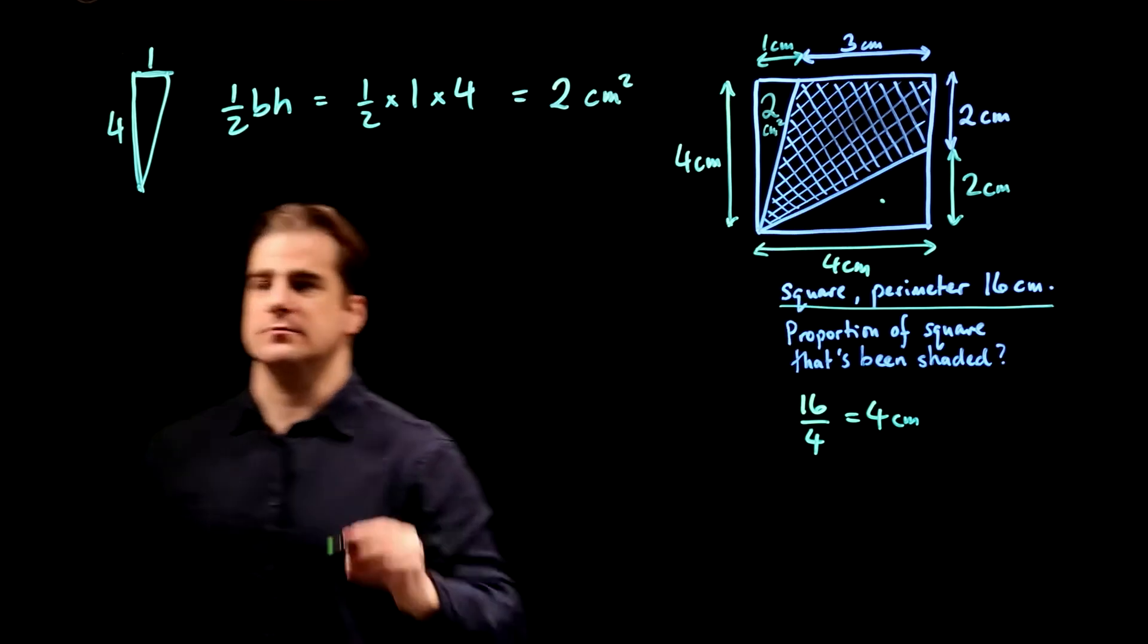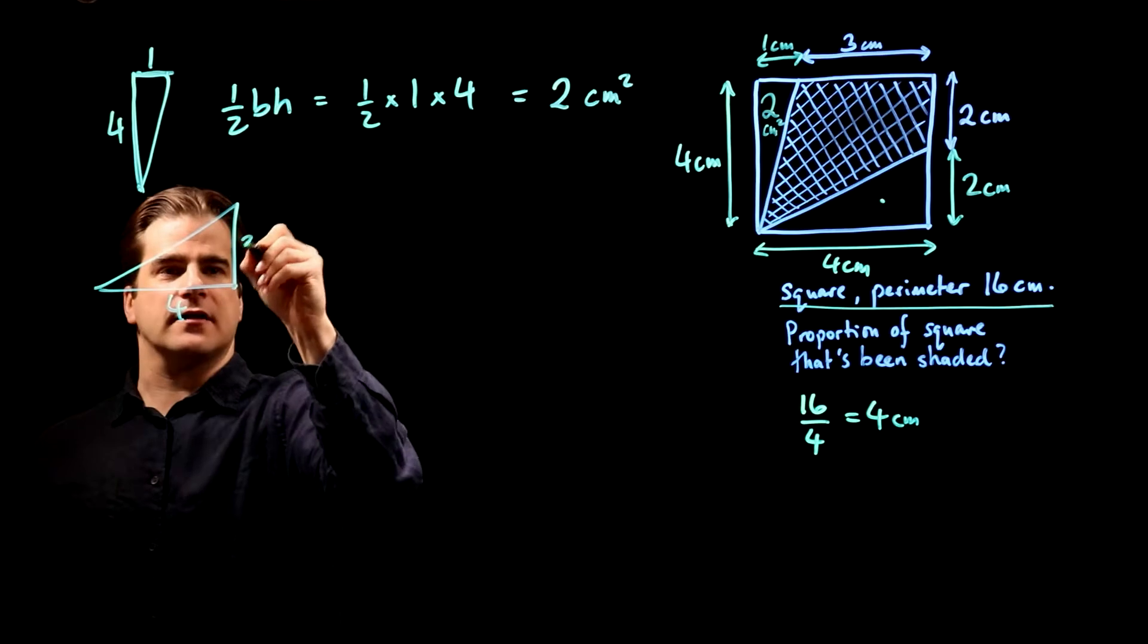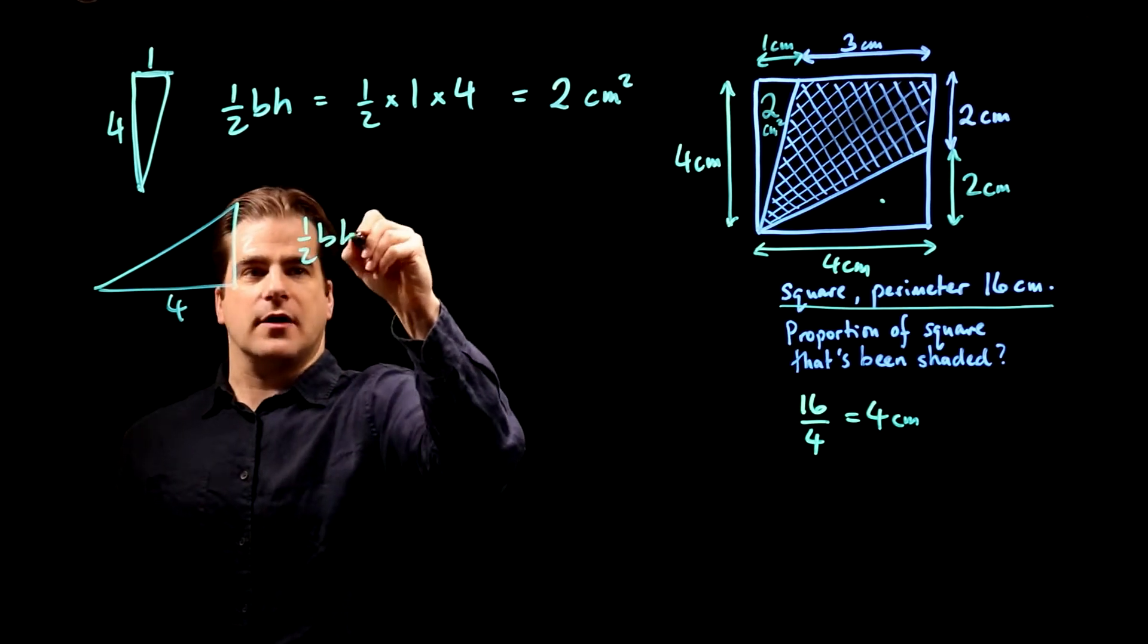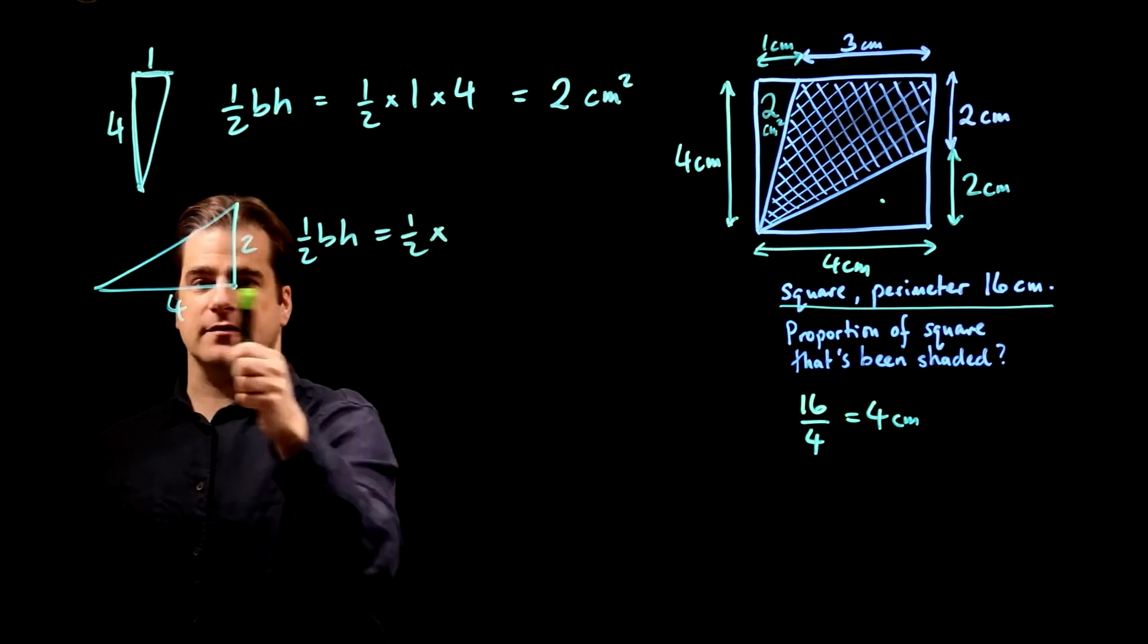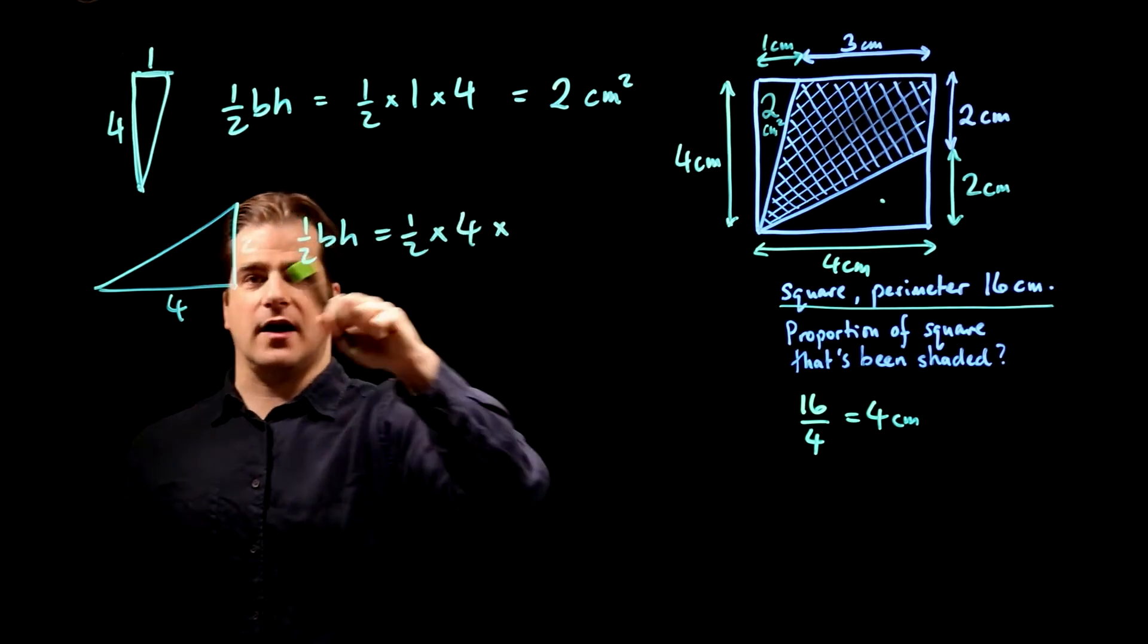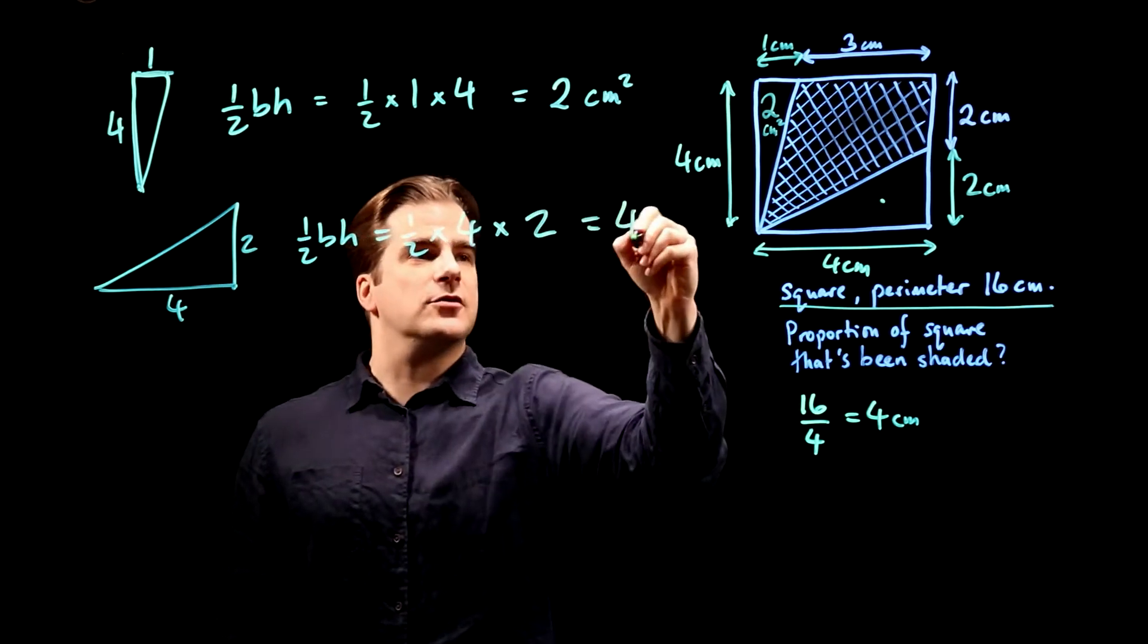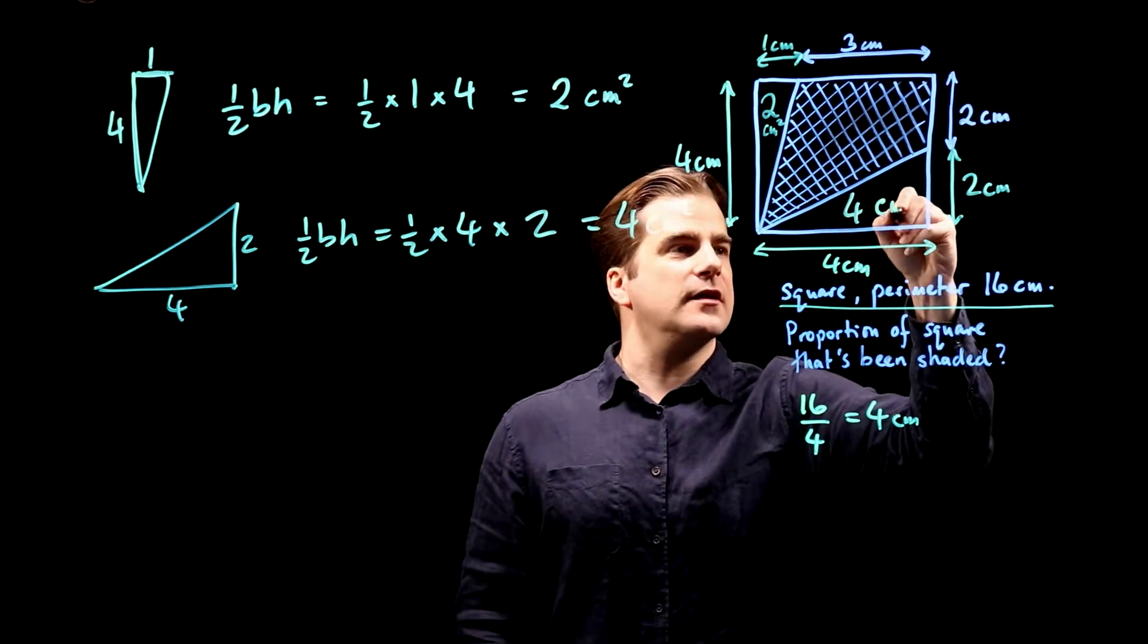Right, now this one, so we've got something like that, that's four and that's two. Half times base times height is half times the base is four times the height is two. So, that's four centimetres squared, four cm squared.